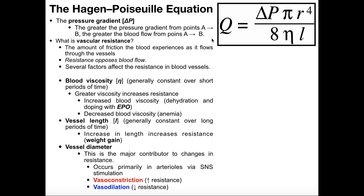We're going to look at four factors: the size of the pressure gradient, the blood viscosity, the vessel length, and the vessel diameter. These latter three are actually going to be factors that directly affect what we call vascular resistance.